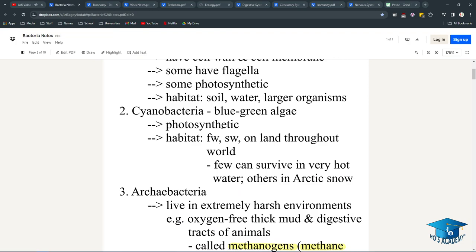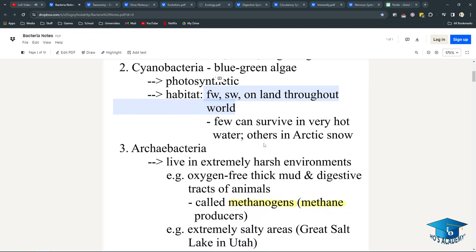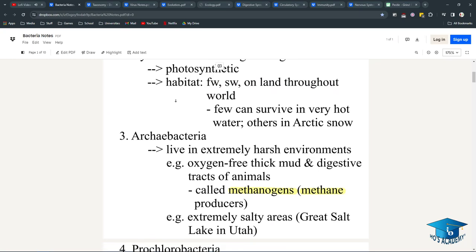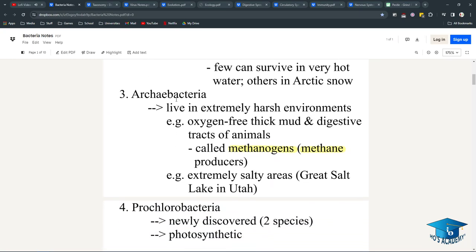Cyanobacteria, or blue-green algae, are photosynthetic. They live in freshwater, seawater, and on land throughout the world. Some can survive in really hot water and some can survive in arctic snow, so they're really wide-ranged organisms.